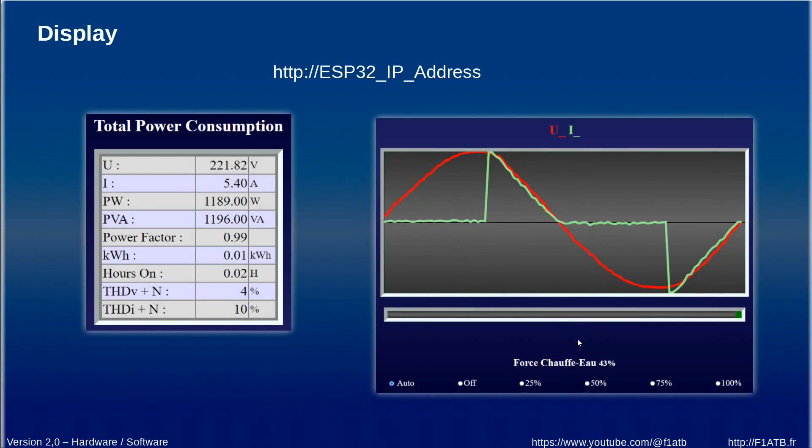on the system we have a server which is able using the wifi to display on a smartphone or any web browser the result of the different computation which are done so we compute the voltage the current the powers some parameters like the total harmonic distortions for the water heater you can work in automatic mode or you can force it to work at 20 percent 50 percent 100 percent or simply to be off